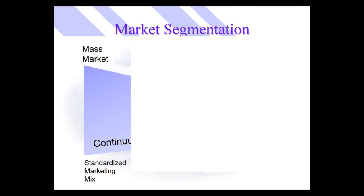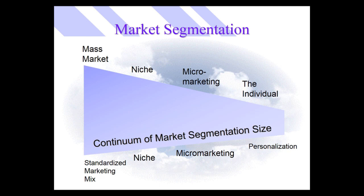We can look at a continuum of market segmentation size. First, there's the whole market — the mass market — where we have a standardized marketing mix. Or, if we start to go narrower, we could go into a niche segment. Or even narrower, we could be into micro-marketing, or even narrower still, personalization and individual marketing.